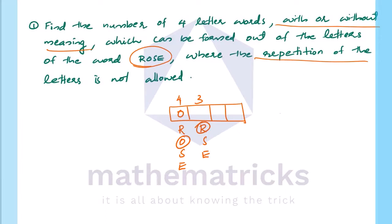Now we will select R for the next place. Then S, and the next place is E — two possibilities, then one. How many possibilities are there? Four into three into two into one — this is equal to 24. So there are 24 possibilities, using the fundamental principle of counting.